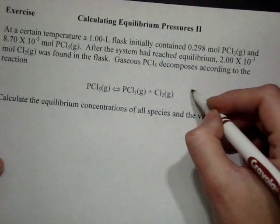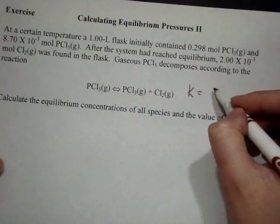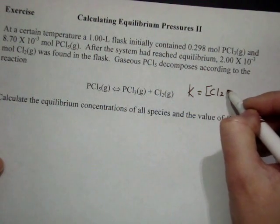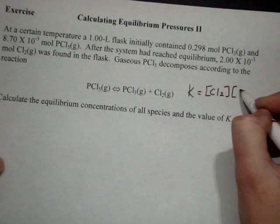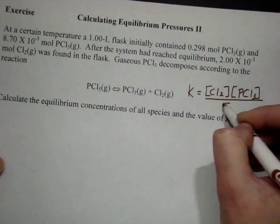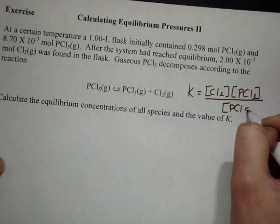The first thing that I'm going to do is set up my K expression. So K, we're all in gas phase. So we have concentration Cl2, concentration PCl3, over concentration PCl5.